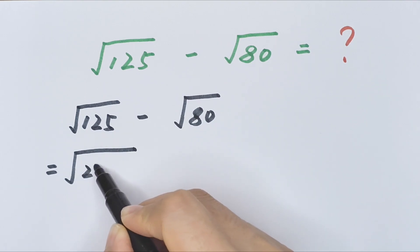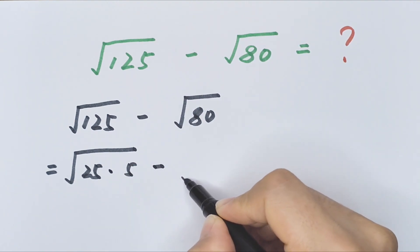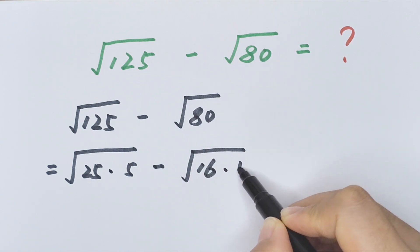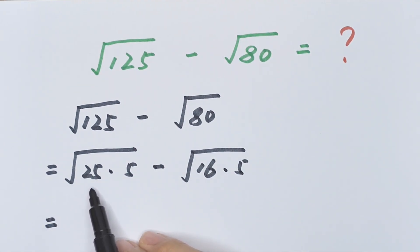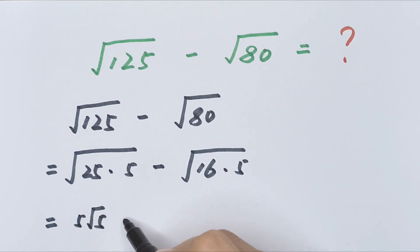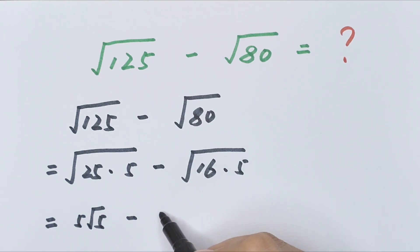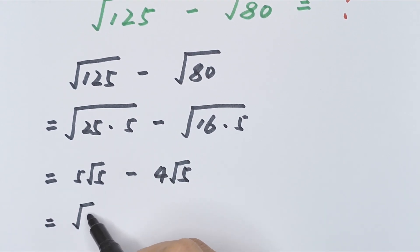Square root of 125 is the same as square root of 25 times 5, then minus square root of 80. Since 25 equals 5 squared, we get 5 square root of 5. Then square root of 16 is 4, giving us 4 square root of 5. So 5 square root of 5 minus 4 square root of 5 equals square root of 5.